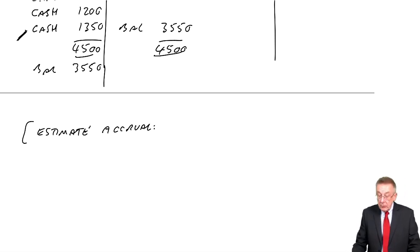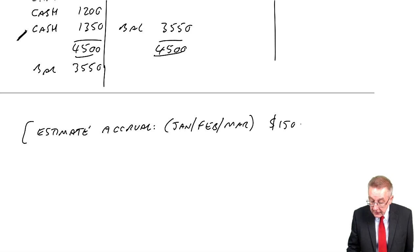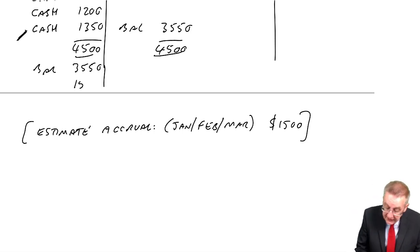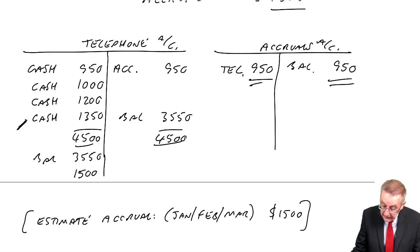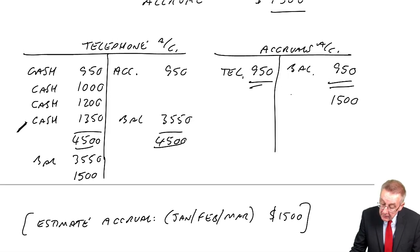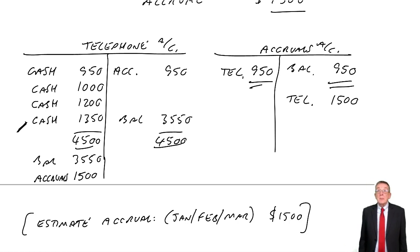So we estimate the accrual. We've only paid to December, we still owe for January, February, March. And the question tells us that we estimate we owe for those three months, £1,500. And so to get the correct expense, so far there's £3,550, but we still owe an extra £1,500. Just as last year, we debit telephone to increase the expense, we credit accruals with the amount owing.